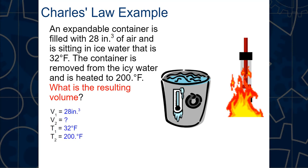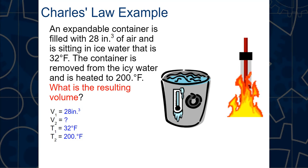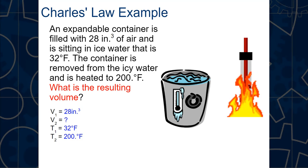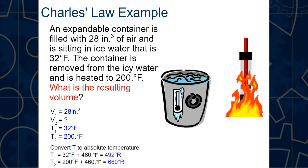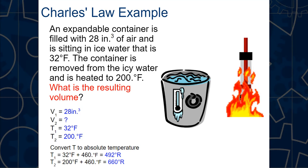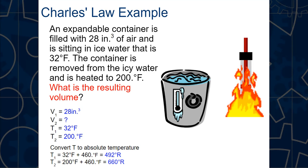Knowns: V₁ = 28 cubic inches, T₁ = 32°F, T₂ = 200°F. V₂ is unknown. The Fahrenheit values need to be converted to Rankine. T₁ = 32 + 460 = 492°R, T₂ = 200 + 460 = 660°R.